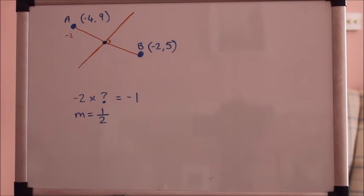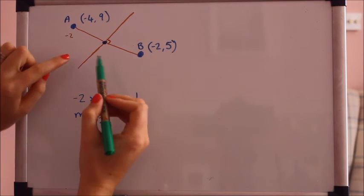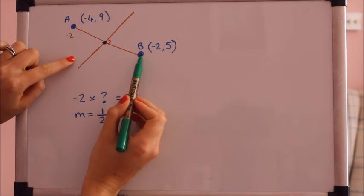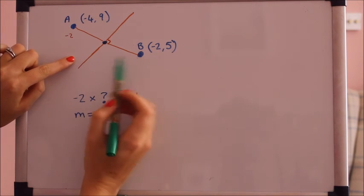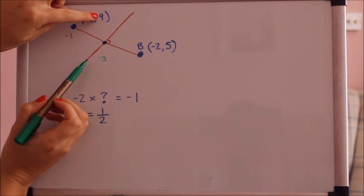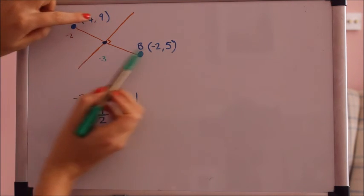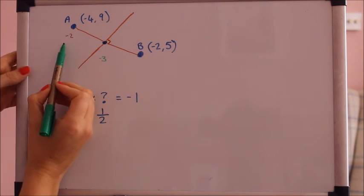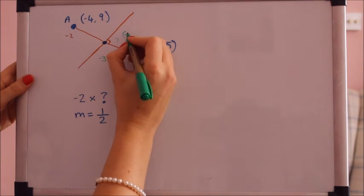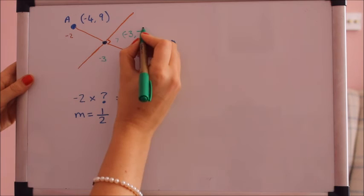Perpendicular bisector goes exactly halfway through so we need the midpoint. I find it easiest, as with everything in straight line work, to split it into the x's and the y's separately. Let's look at the x values: we've got minus 4 and minus 2, halfway in between those must be minus 3. Look at the y values next: 9 and 5, halfway between those will be 7. So that point there is minus 3 comma 7.